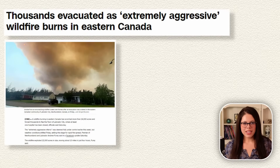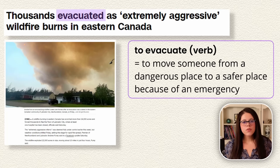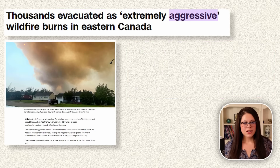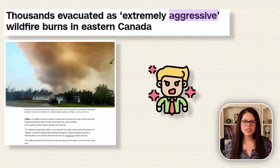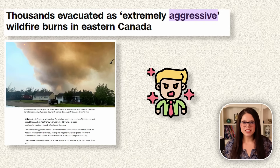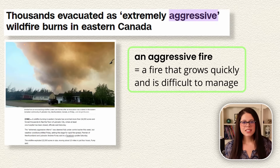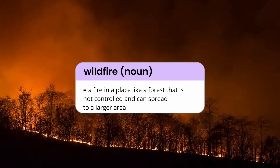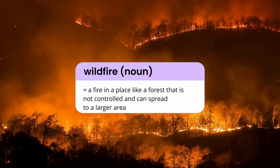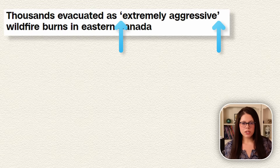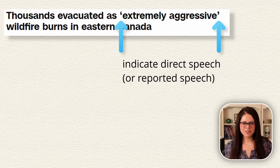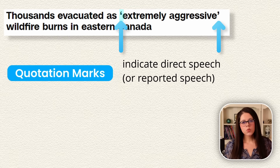Next: 'Thousands evacuated as extremely aggressive wildfire burns in eastern Canada.' The verb 'evacuate' means to move someone from a dangerous place to a safer place because of an emergency. We usually use the adjective 'aggressive' to describe a person who behaves in a very angry way, but in this context an aggressive fire is a fire that grows quickly and is difficult to manage. A wildfire is a fire in a place like a forest that is not controlled and can spread to a larger area.